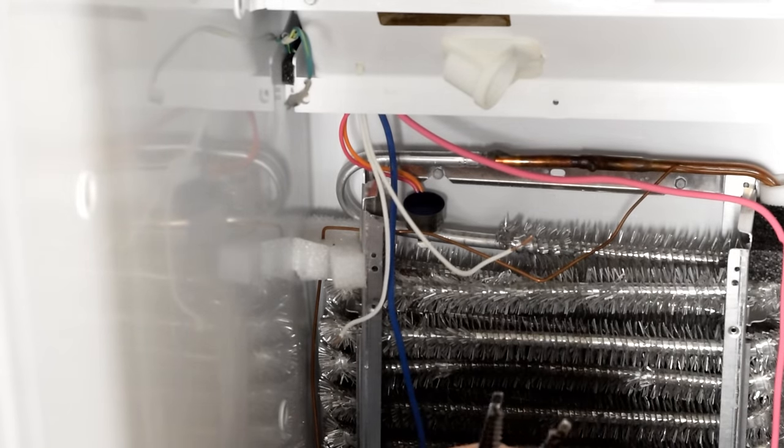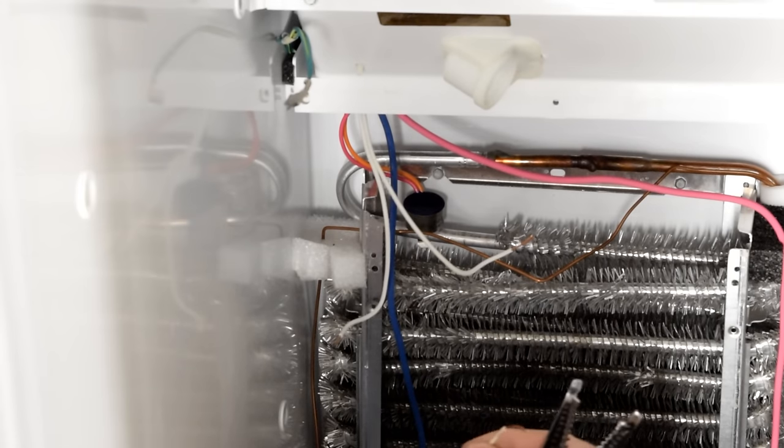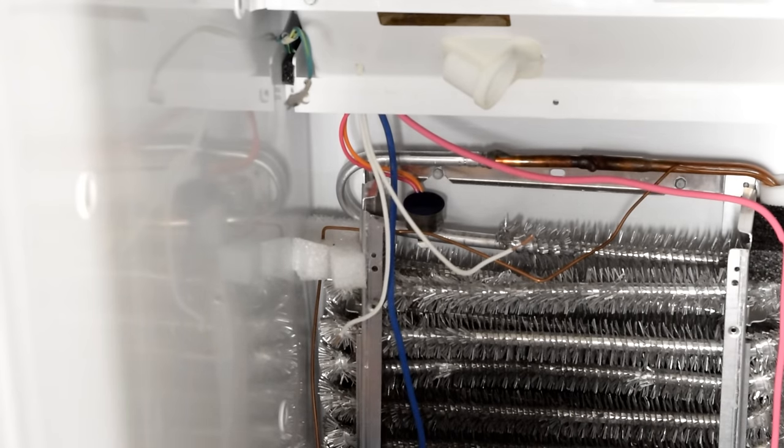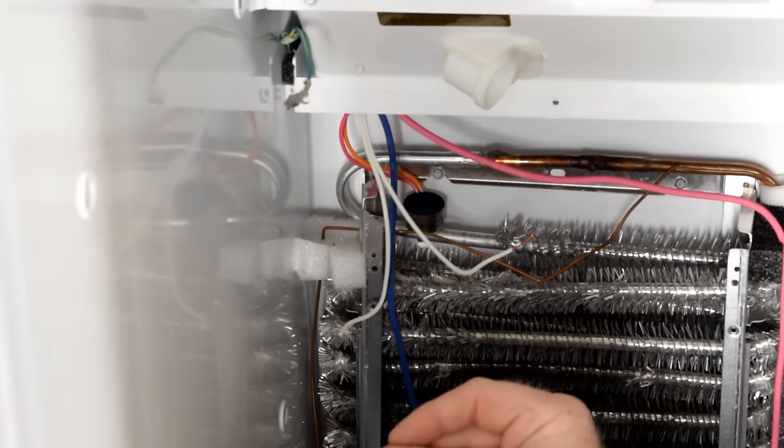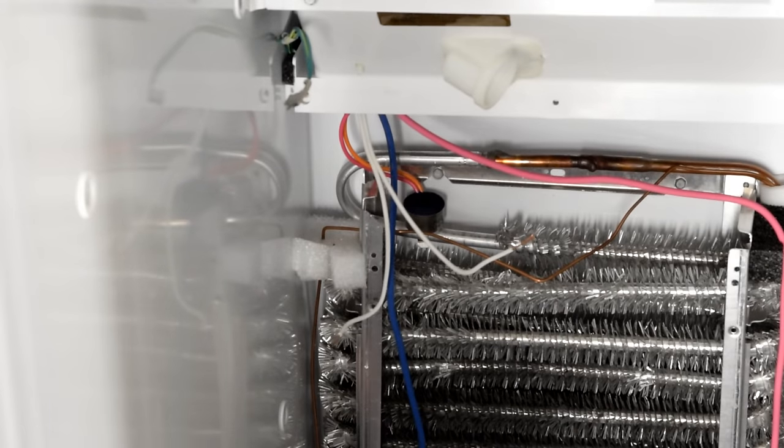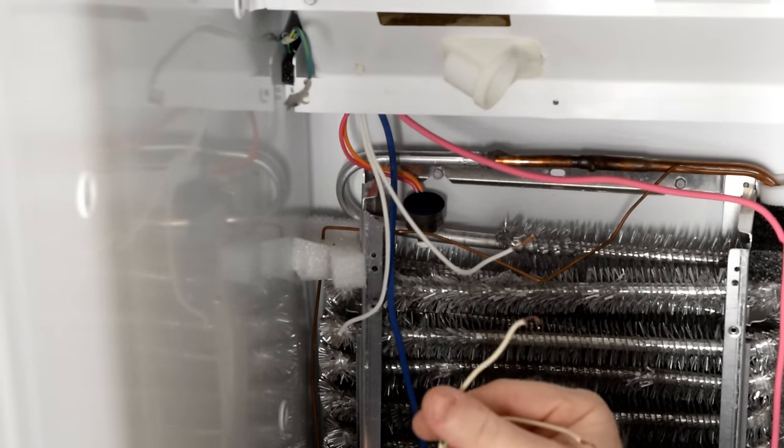With your new sensor, we're going to do the same. Strip off about half an inch and separate them out. Don't forget to put your shrink tubing on first. Got our new sensor with the shrink tubing on there.